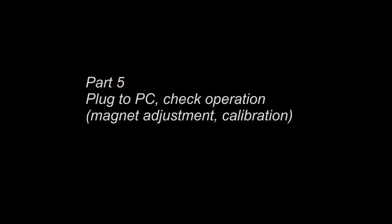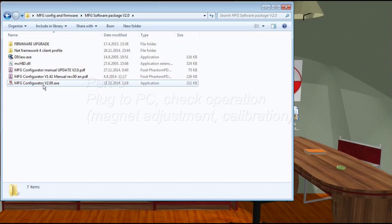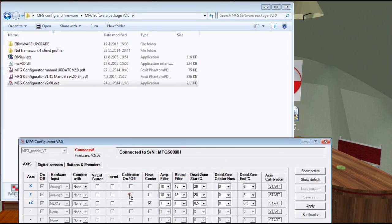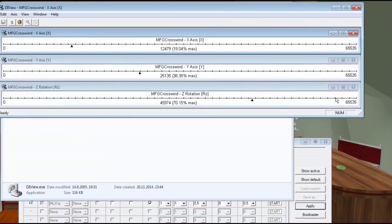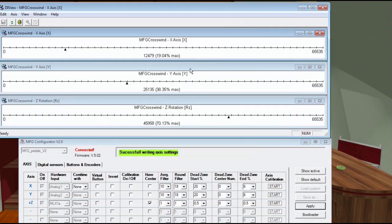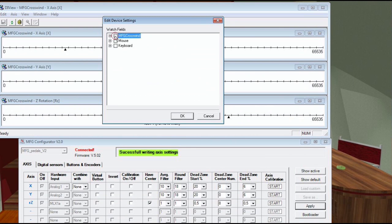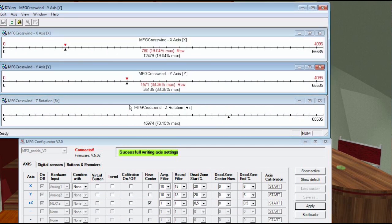Finally, plug in pedals to the PC. Run MFG config v2.0. Make sure calibration on off is turned off on all three axes. Open the eye view and uncheck everything except the crosswind's three axes. Test all three axes if they are working correctly.